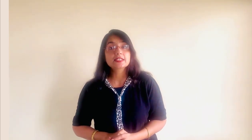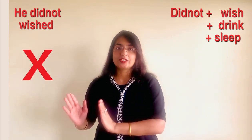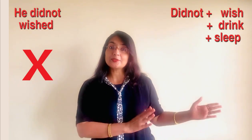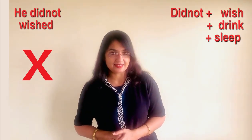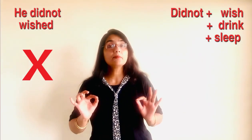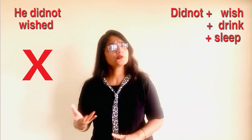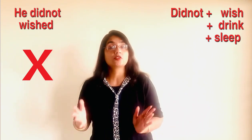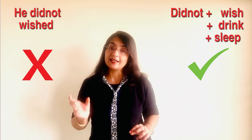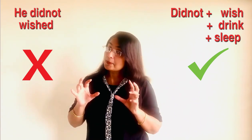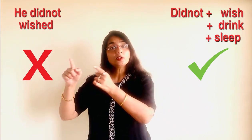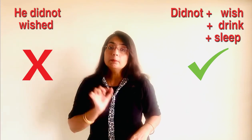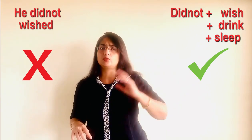The fourth mistake: I said 'he did not wished me.' After 'did not,' the verb must always be in the base form — never add '-ed.' So we say 'he did not wish,' 'he did not come,' 'he did not sleep,' 'he did not drink.' It doesn't matter that it is past tense — 'did not' already carries the past tense, so the following verb stays in simple present form.